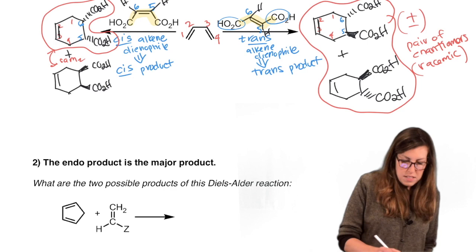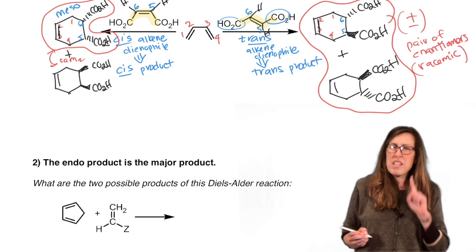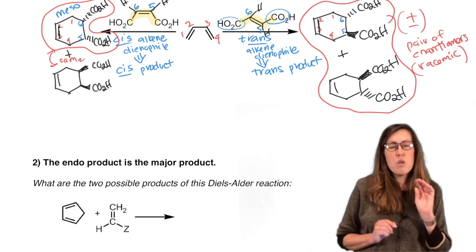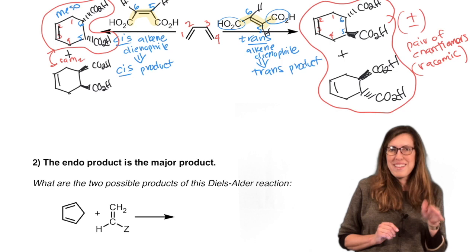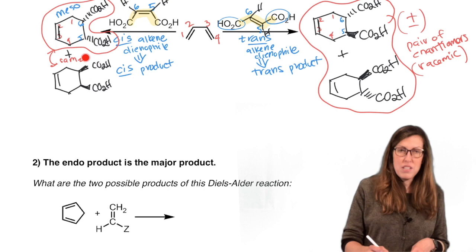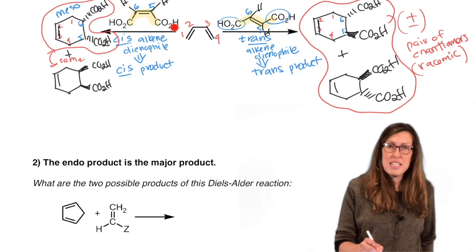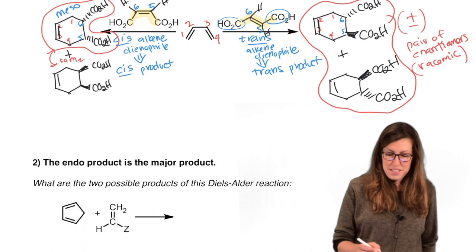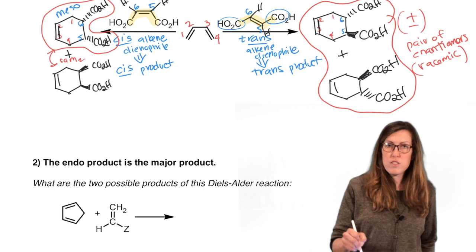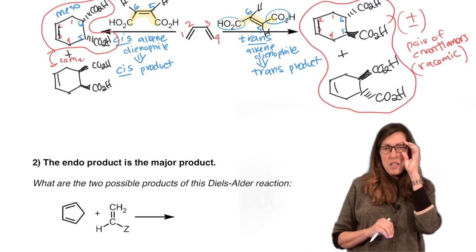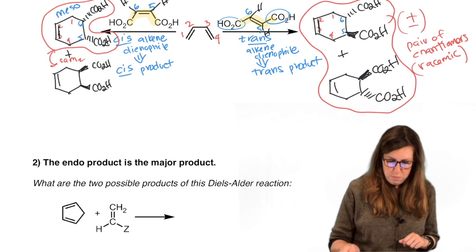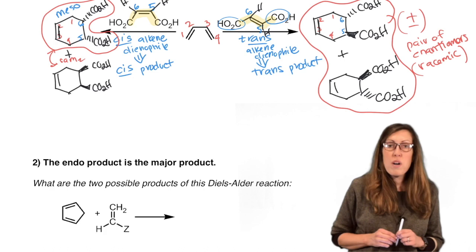When there's so much symmetry that both approaches give the same product, we only have one unique product — the meso compound. You have to be cautious about automatically saying it's always racemic, because if there's a plane of symmetry, that's not true. Moral of the story: cis starting material gives cis product; trans starting material gives trans product. Always consider both top and bottom approach — consider both enantiomers if they exist. Proceed with caution. That was stereo selectivity rule number one — we retain the cis/trans relationship.